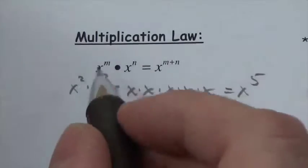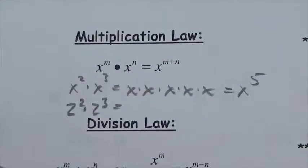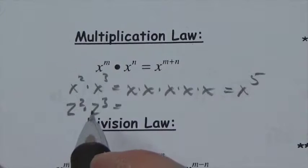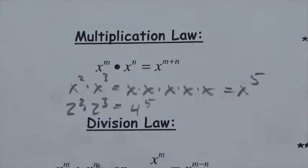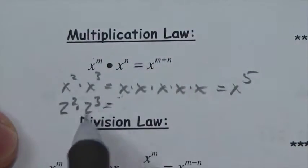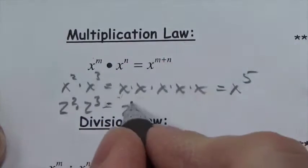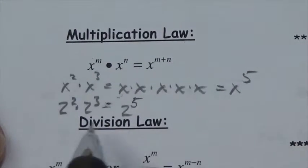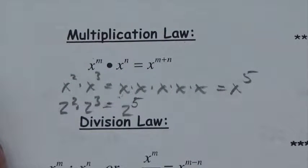There have been times when I've seen people take two squared times two cubed and write that's four to the fifth, because they multiply the bases together. No — what you're doing is multiplying the powers together. The way we do that is to leave the base the same and add the exponents. Don't think of it as multiplying the bases together, because you're not. You're multiplying the powers together and we do that by adding the exponents.